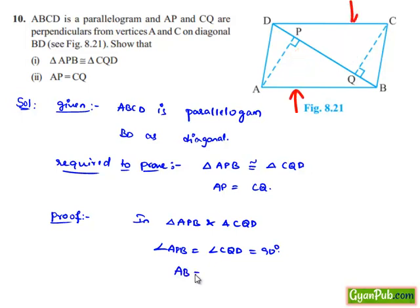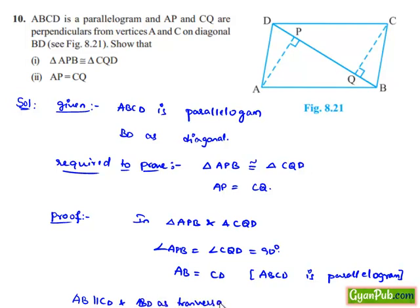AB is equal to CD as in the parallelogram, opposite sides are parallel and equal. If we consider AB parallel to CD and BD as transversal, we can say angle CDQ is equal to angle ABD since they are alternate interior angles.